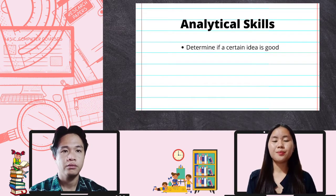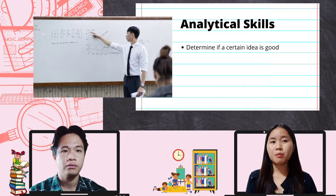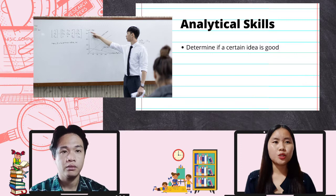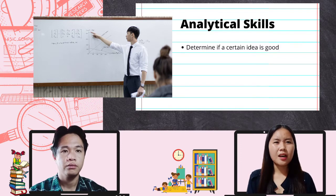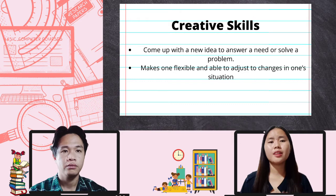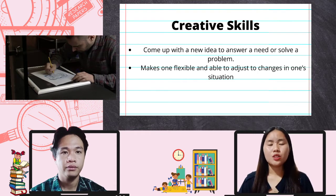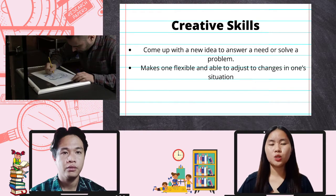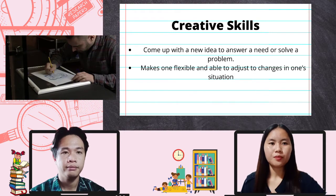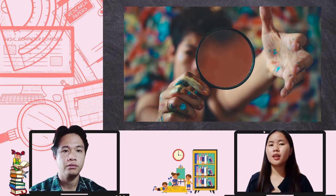The second skill is analytical skills. Analytical skills help a person determine if a certain idea is good. Analysis is very important before one can think of new and better ideas. Analytical skills are also important because they allow you to find solutions to common problems and make informed decisions about which action to take. The third skill is creative skills, which allow a person to come up with a new idea to answer a need or solve a problem, and make one flexible and able to adjust to changes. Creativity gives birth to new and better solutions to problems.